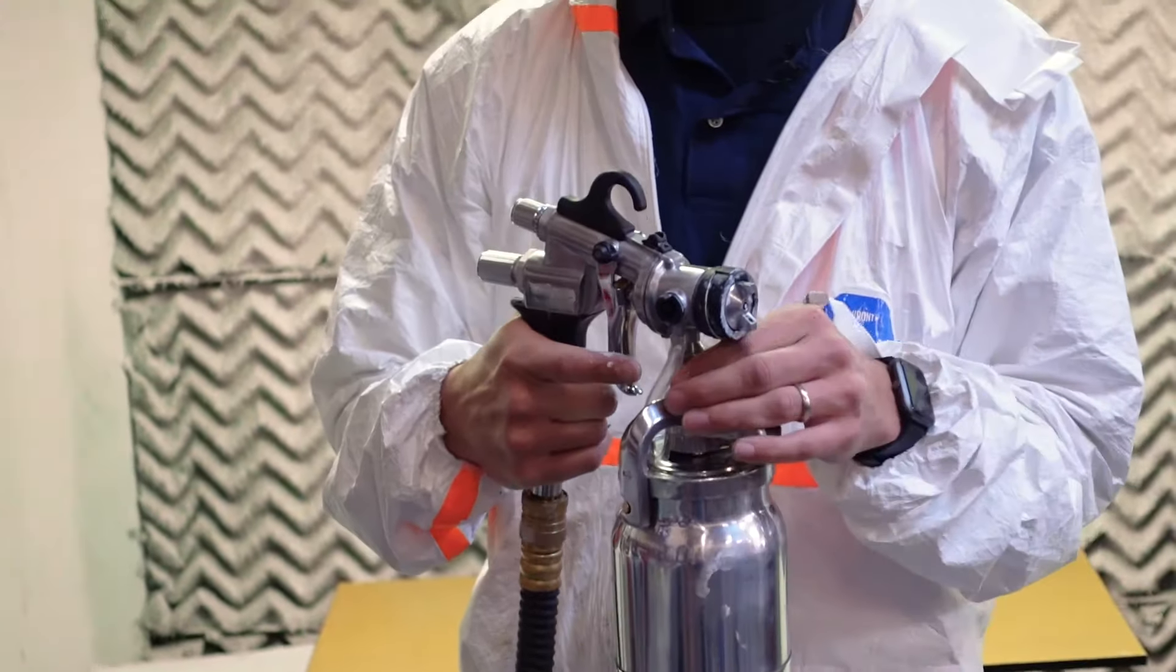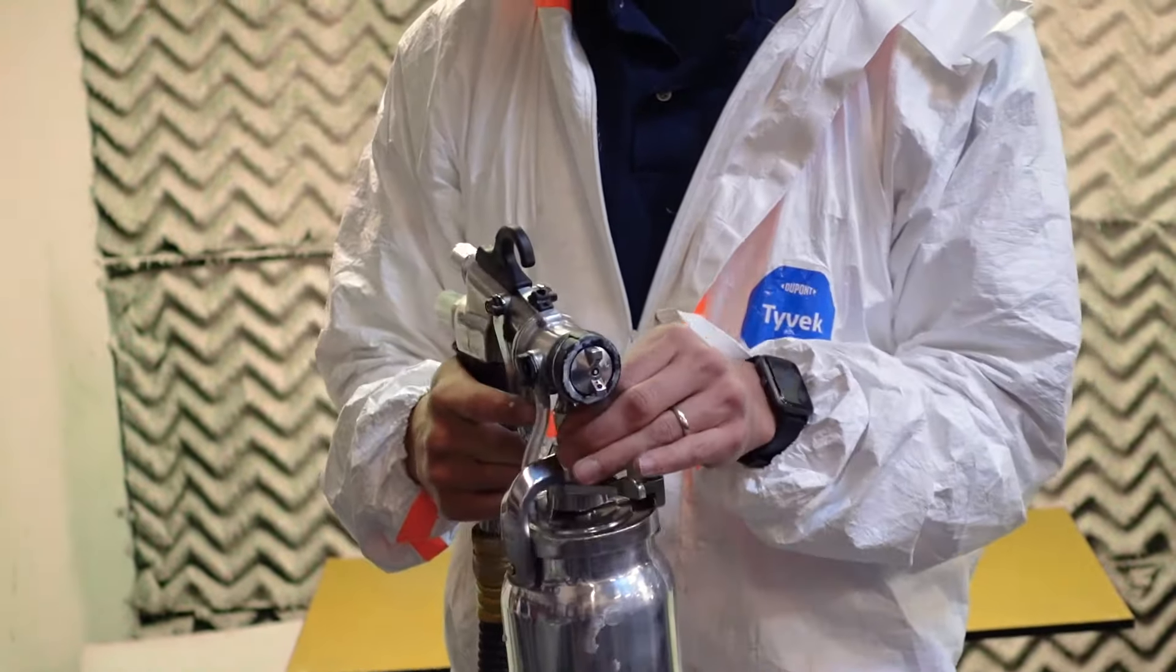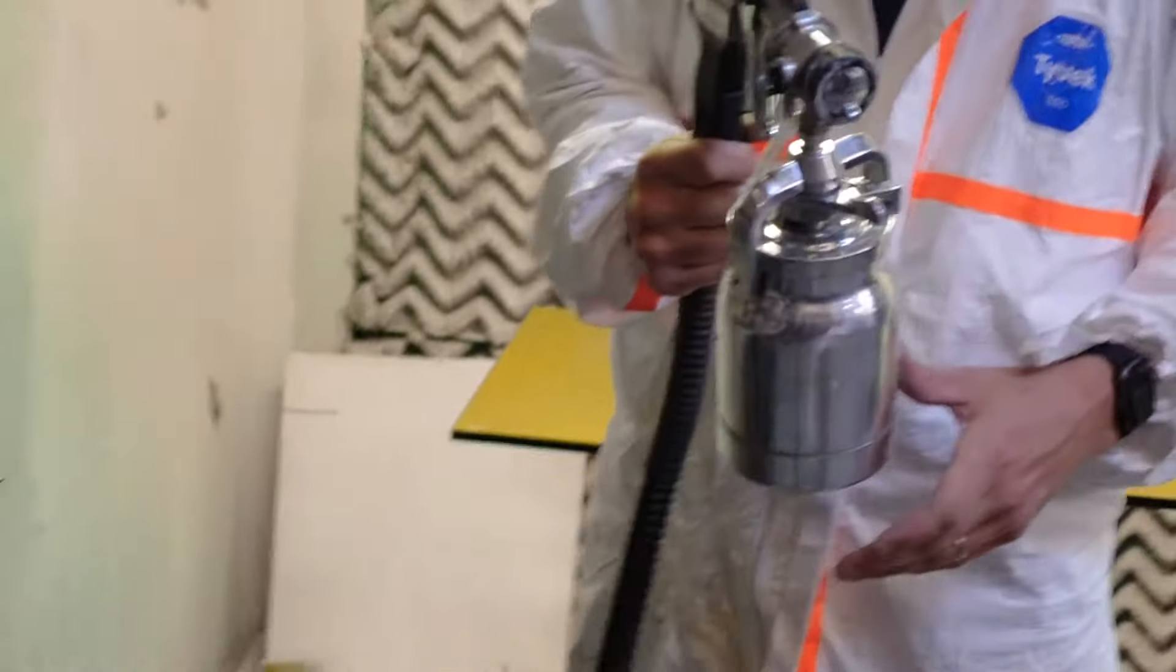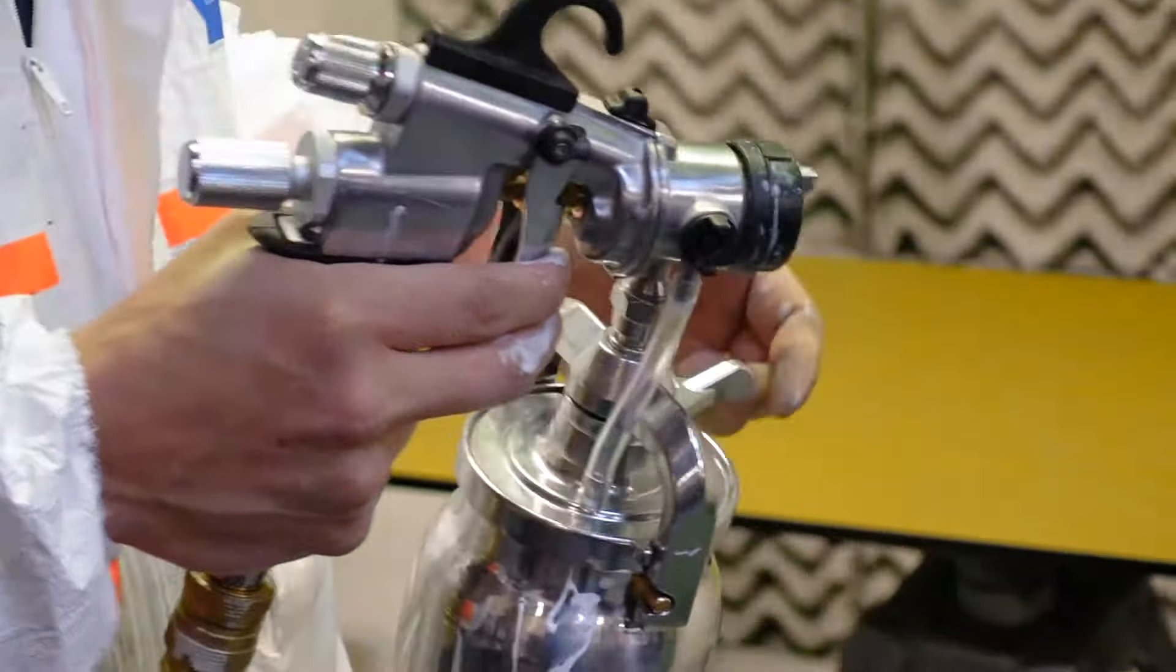We'll go ahead and start. This is going to be using the same gun and three different turbine motors to pressure the material, and we'll show you the difference between each. We're using Sherwin-Williams Emerald with a 1.8 tip. This is a four stage turbine. Material is not thinned at all.